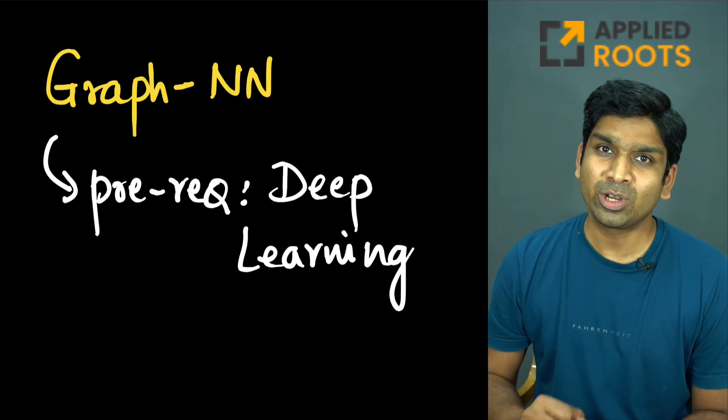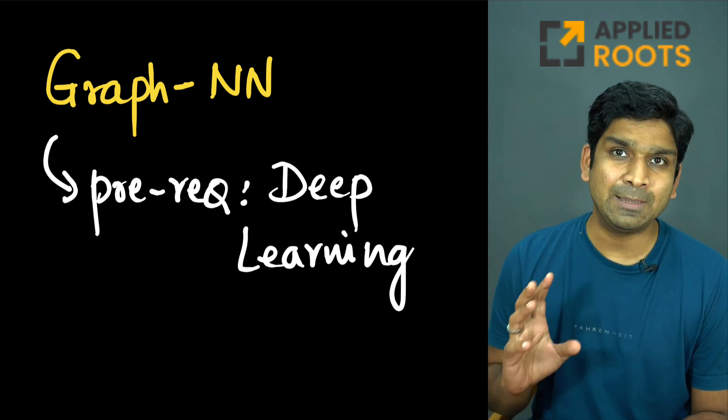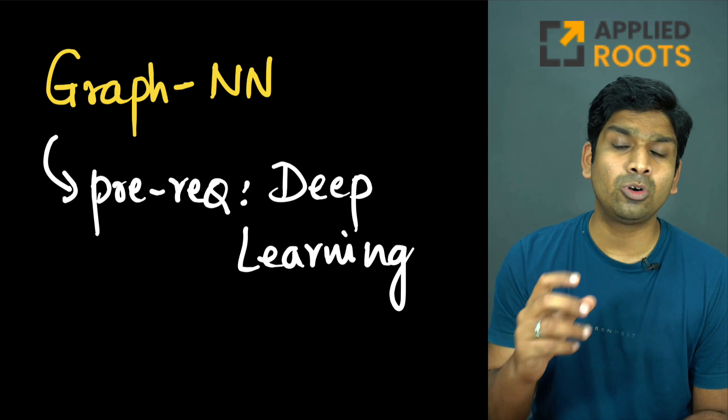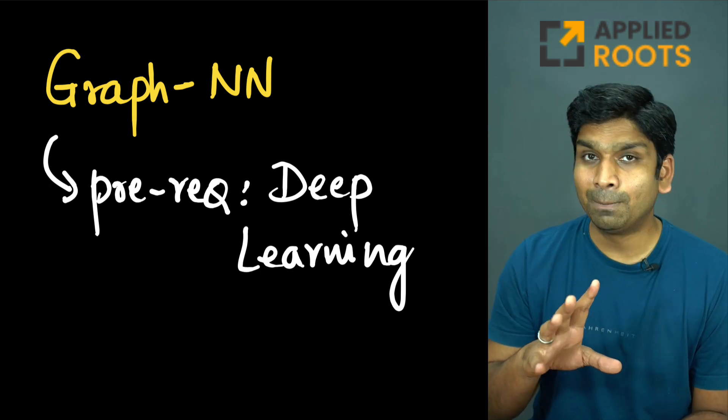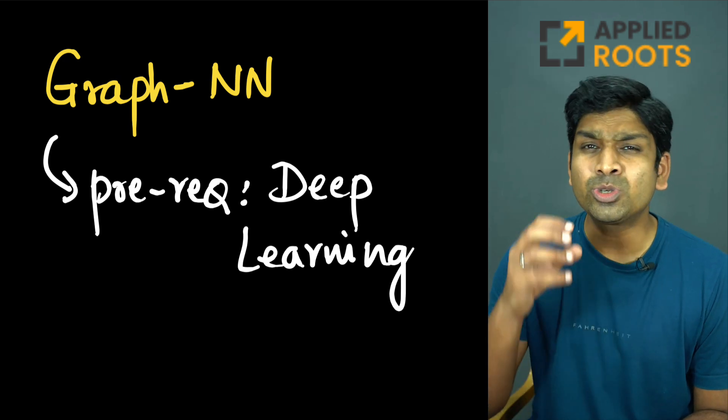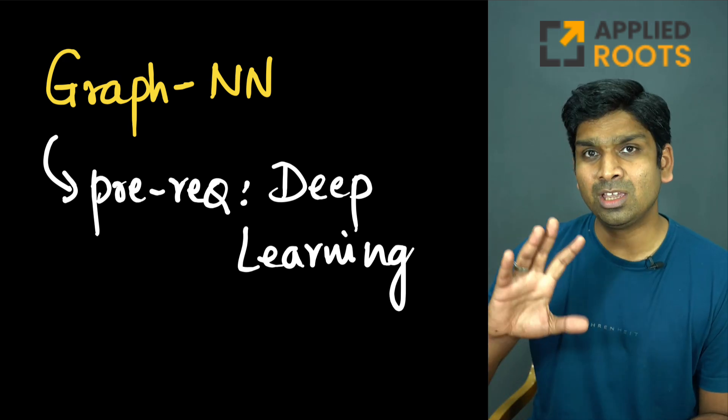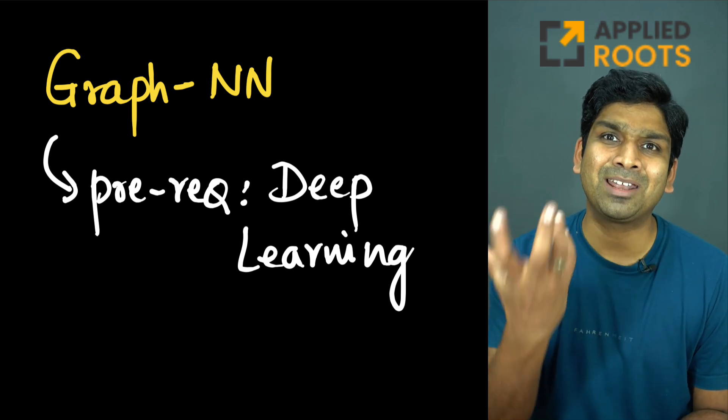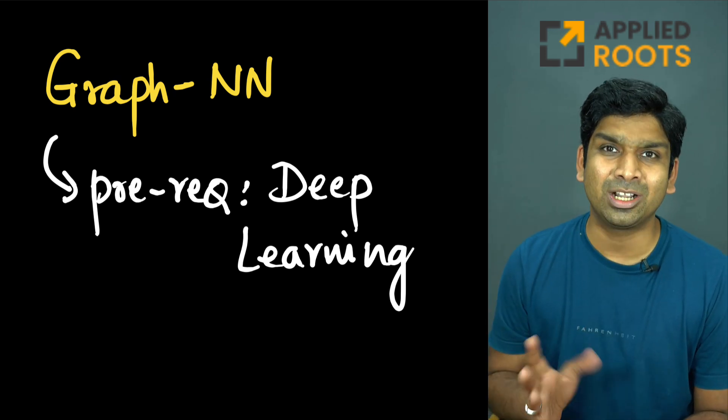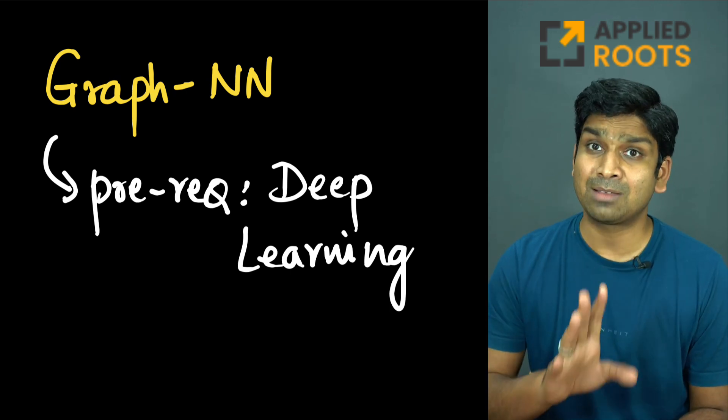The prerequisites for this series of live sessions on graph neural networks would be that you understand deep learning. You should at least know MLPs and CNNs, but if you also know transformers, your depth of understanding would be better. CNNs and MLPs are a mandatory requirement. If you know transformers, you can get a better understanding of graph neural networks in general. It's good to have, not a must-have. But CNNs and MLPs are a must-have.